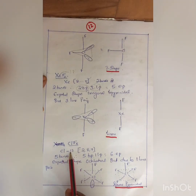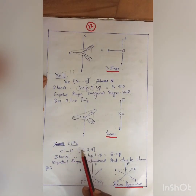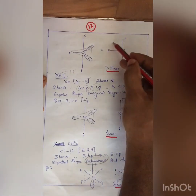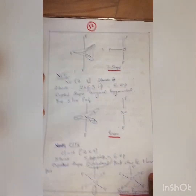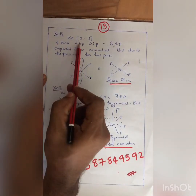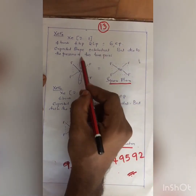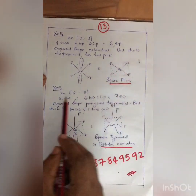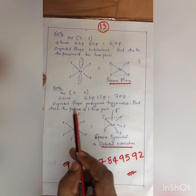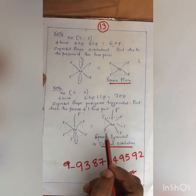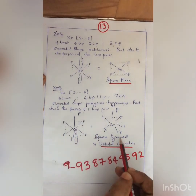For ClF5 — chlorine 17, configuration 2,8,7 — there are 5 bonds: 5 BP, 1 LP, giving 6 EP. The expected shape is octahedral, but with one lone pair in the axial position, the shape is square pyramidal. For XeF4 — 4 bonds, 4 BP, 2 LP, 6 EP — expected octahedral, but with 2 lone pairs the shape is square planar. For XeF6 — 6 bonds, 6 BP, 1 LP, 7 EP — expected pentagonal bipyramidal, but with one lone pair in the axial position, the shape is distorted octahedral.